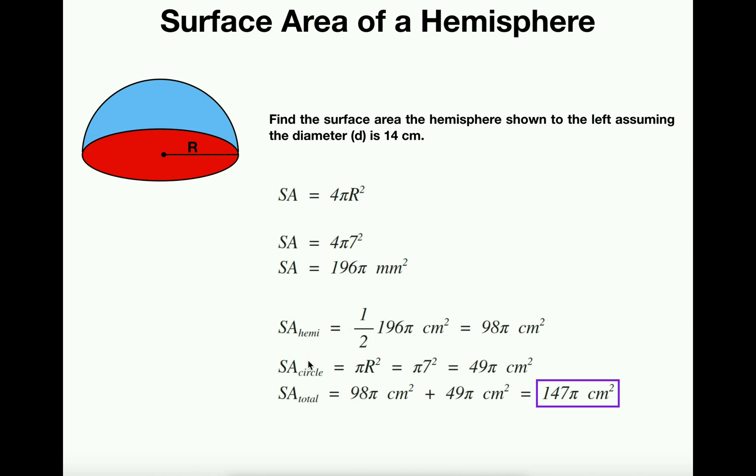And now that we've determined each section independently, we just add them. Therefore, the total surface area is the surface area of the hemisphere, 98π cm², plus the surface area of the circle, 49π cm². And our total surface area is 147π cm².